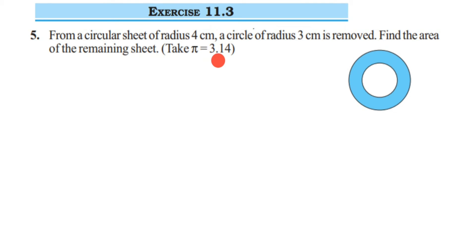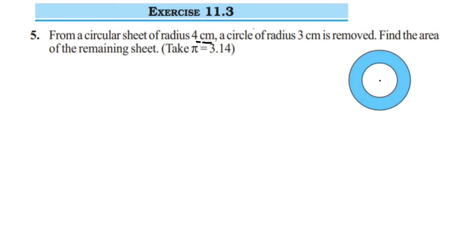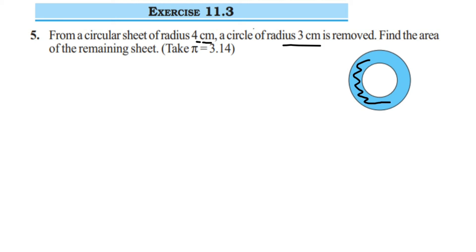So what is given and what are we asked to find? We have two circles given. The first, outer circle has a radius of 4 centimeters. From this big circle, another circle of radius 3 centimeters has been removed — that's the white area you can see in the figure. We have to find the remaining area, which is the blue colored area left in the picture.